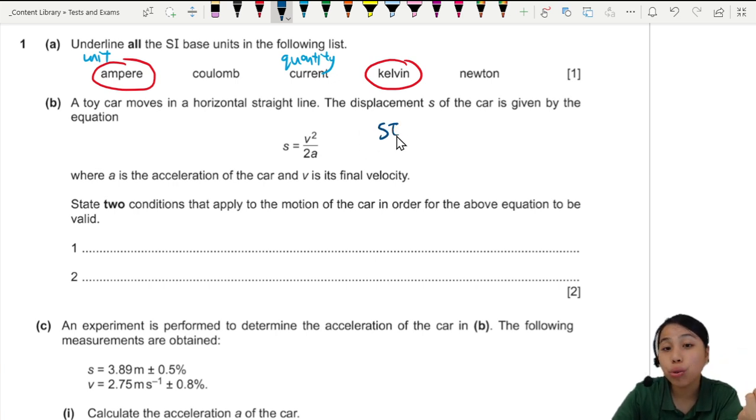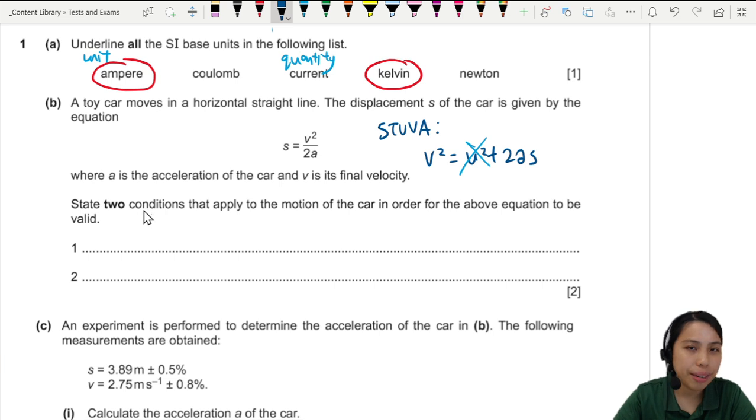This is one of what we call the SUVAT equation. And the original form of it is V squared equals U squared plus 2AS. But as you notice, there's no U in the equation. So maybe you want to talk about that first. U is the initial speed, right? So you want to say that there's no initial speed. It's at rest. Initial speed is zero. Because there's no U in the equation.